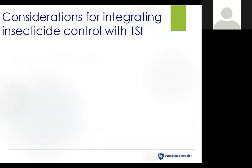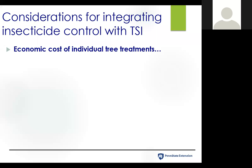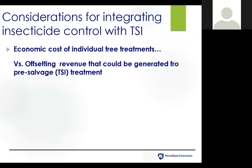Now I want to talk about integrating insecticide control with timber stand improvements — either a thinning or a crop tree release. We tend to think about using insecticides to save large ash more in a residential or community context, or perhaps a state park. But I've even heard of our state forest trying to integrate this with some of their harvesting. It really comes down to the economic cost to treat these individual trees, and comparing that to the potential revenue that could be generated from a pre-salvage treatment.